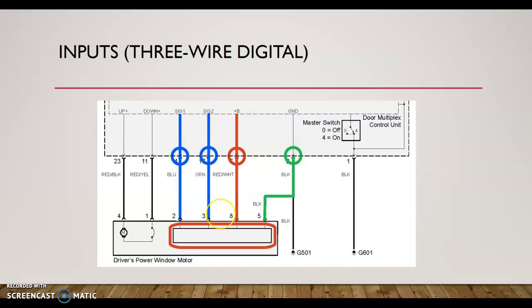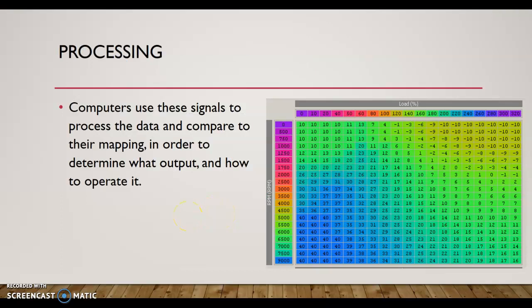The computer takes these kinds of inputs among many other inputs and is going to process that data and compare it to the mapping in order to determine what output and how to operate that output. For example, I have a crude old version of a timing table here. If you look, this is all in timing degrees—this is a chart based on engine RPM, and up here is engine load. So as you can see, if I had 80% right here and I was at a thousand RPMs, here's 11 degrees before top dead center for timing. The computer is going to look at all of this if-this-then-that strategy on this XY axis for this kind of old-school mapping.